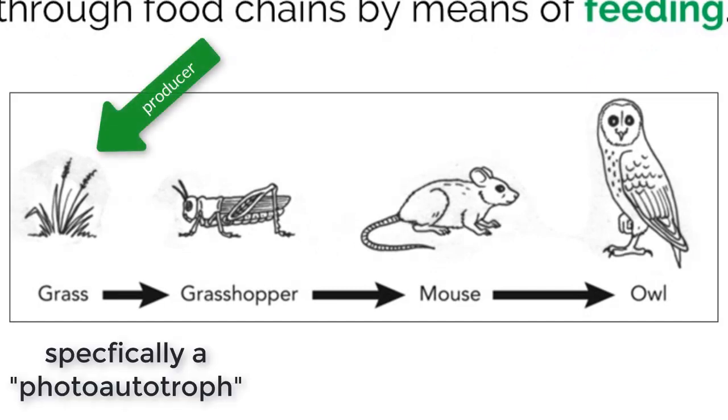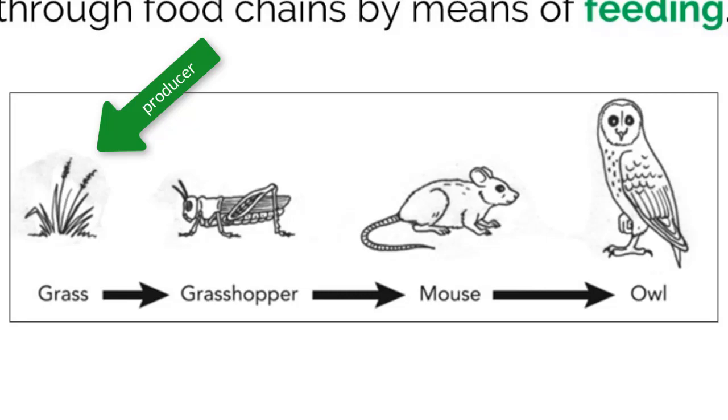The grass is an autotroph, so it uses energy from the sun to create carbon compounds that it can use to make ATP. The grass is making energy for itself to live, and everything is going well, until the grasshopper comes along. The grasshopper is going to eat the grass, meaning it will ingest the plant tissue that was storing the carbon compounds for energy.